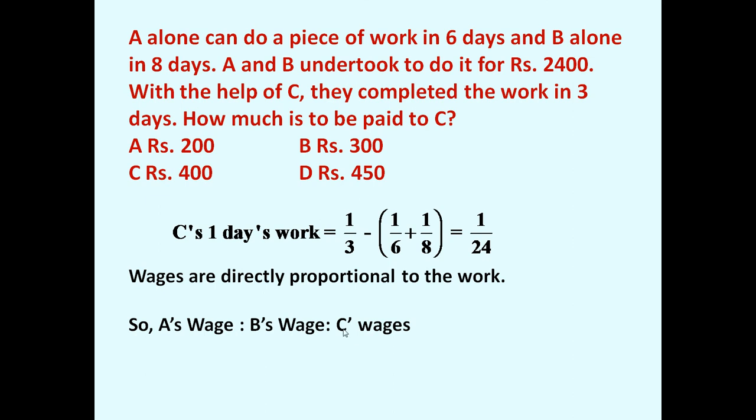So A's wage to B's wage to C's wage is equal to 1/6 : 1/8 : 1/24. Because C's work per day is 1/24, B's wage is proportional to the work done by B in one day.